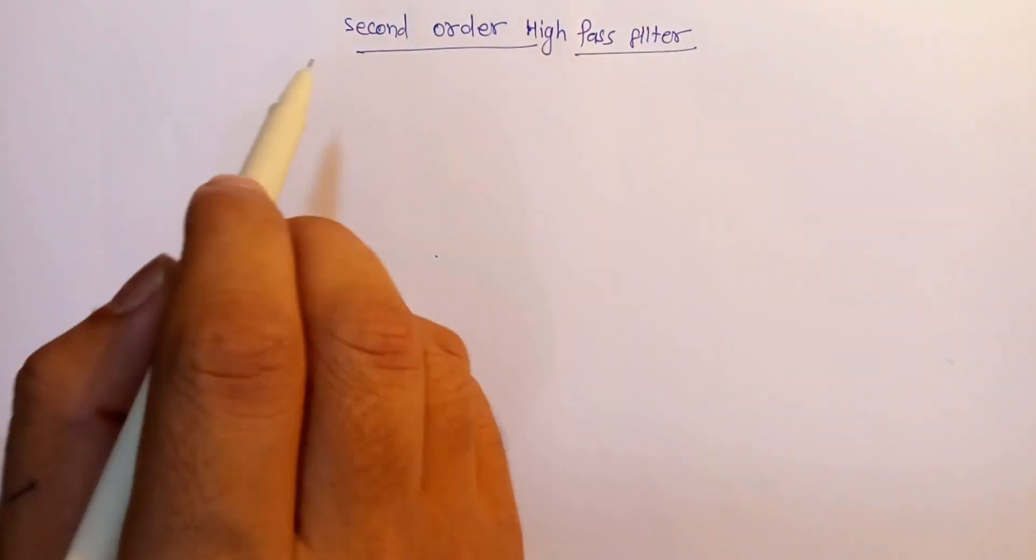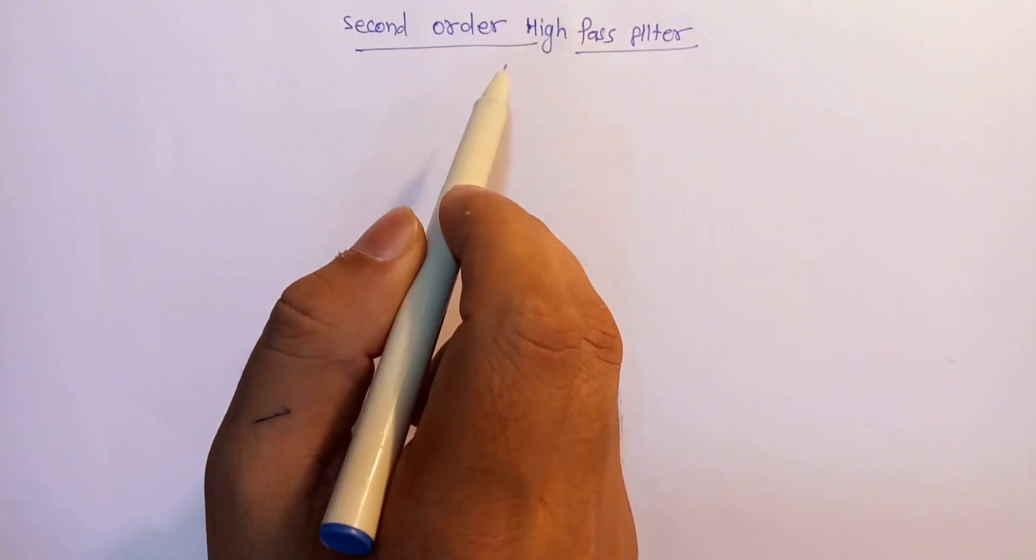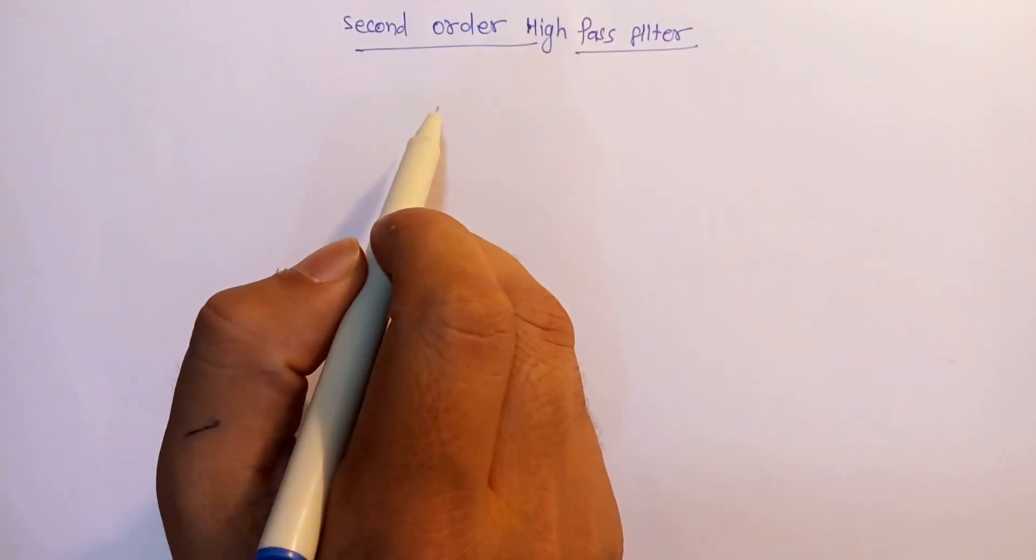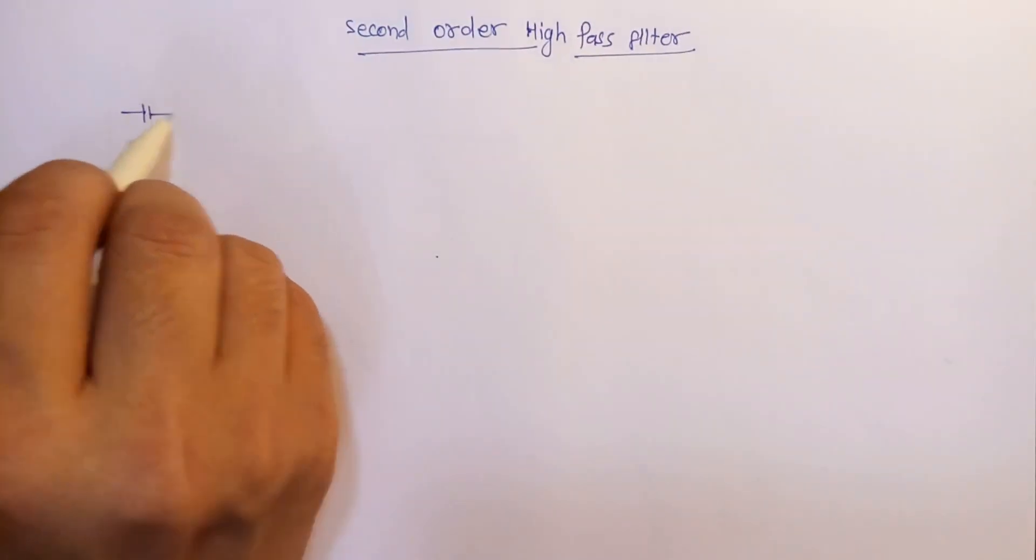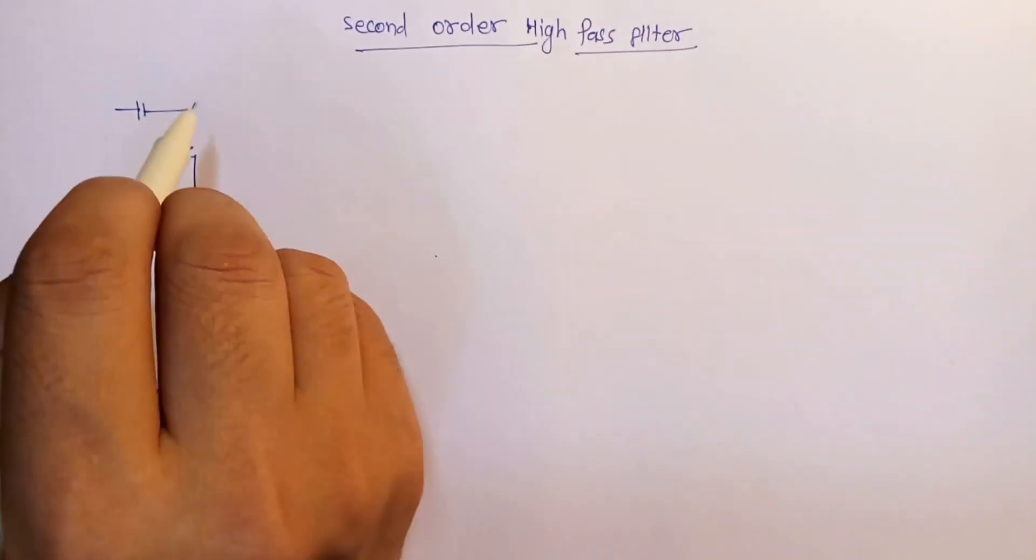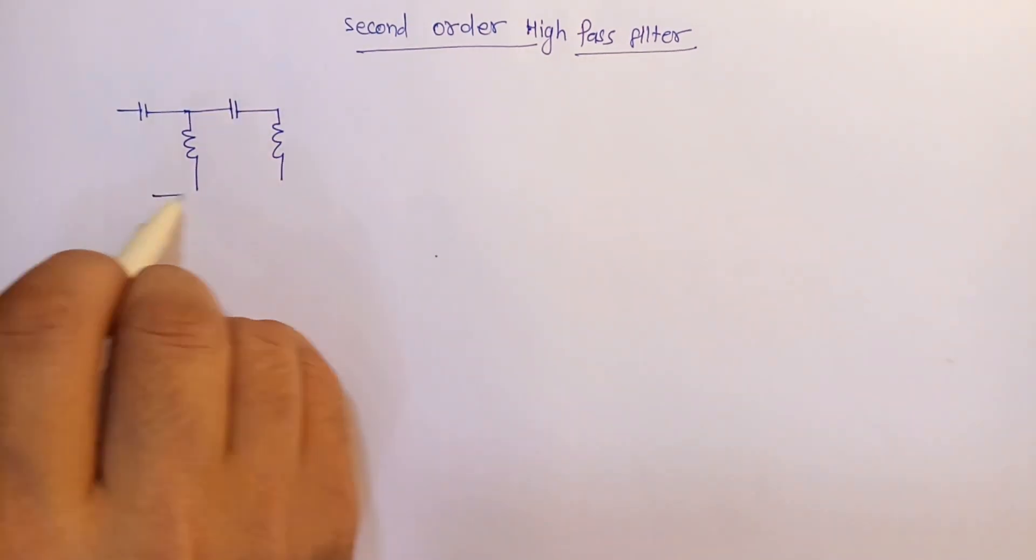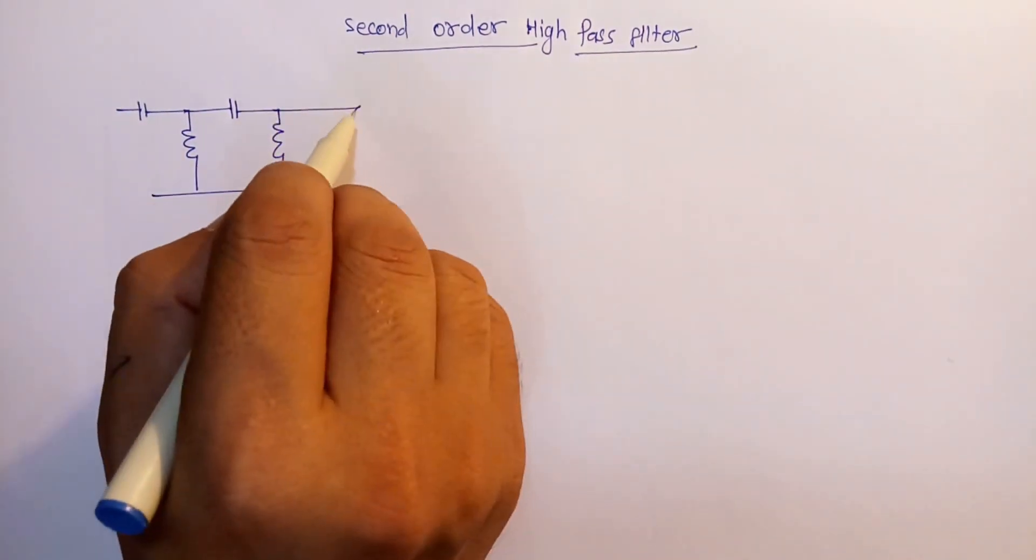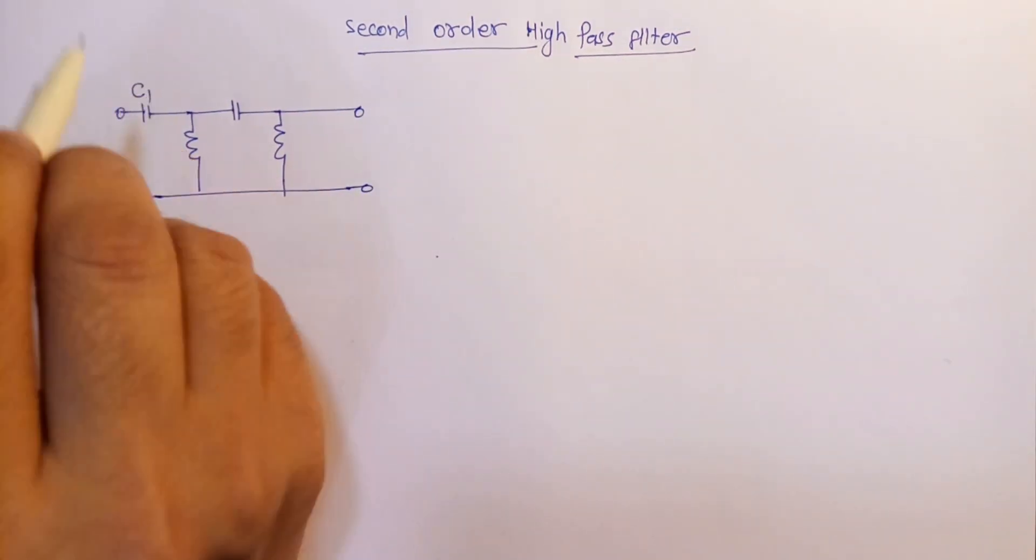Similarly, a second order high pass filter can be constructed by cascading or connecting together two first order circuits. So if we implement a capacitor and a resistance, and then again a capacitor and then resistance, there will be the output. This is the input you can take.